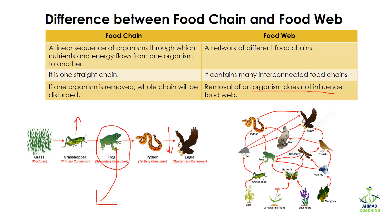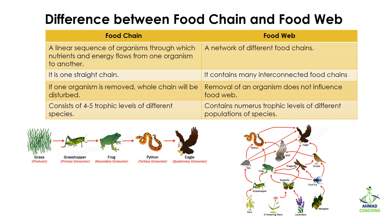In the case of a food web, removal of one organism does not influence the food web because an alternative is present. For example, if I remove this flowering plant, no problem — the butterfly can visit the lavender. They have alternative options, so it is not going to influence the food web.